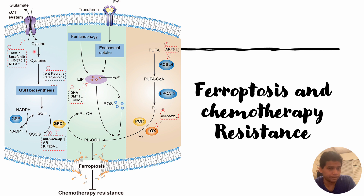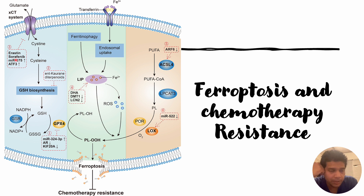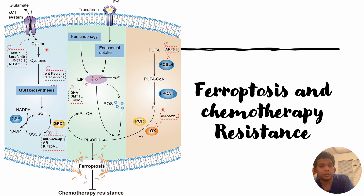As discussed in a previous video, the cascade effect of ferroptosis involves high amounts of cystine in the tumor microenvironment entering tumor cells, where it contributes to GPX4 formation. This cystine entry can be inhibited using inhibitors such as erastin or sorafenib. Additionally, upregulation of microRNA-375 or ATF-3 will prevent cystine entry into tumor cells.